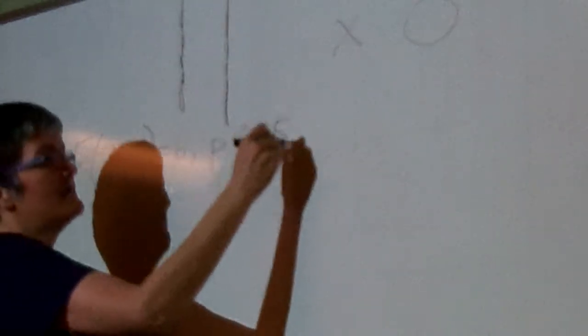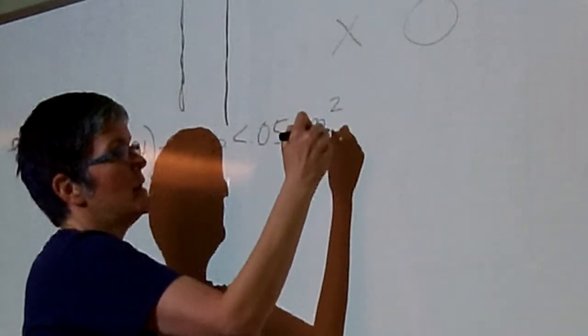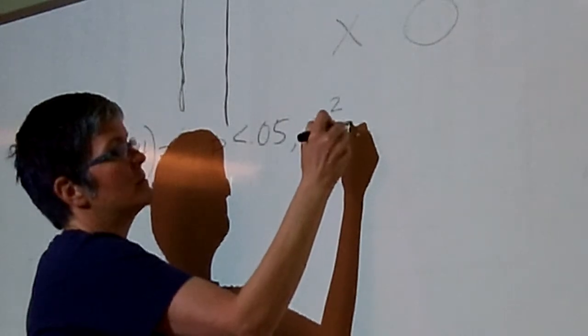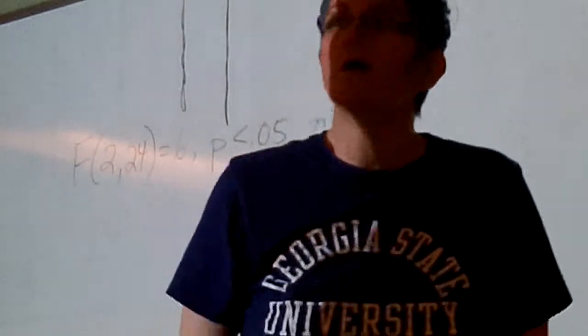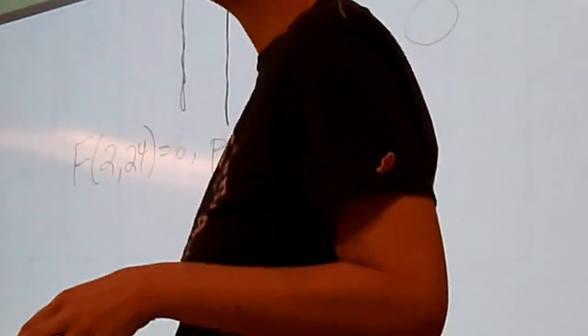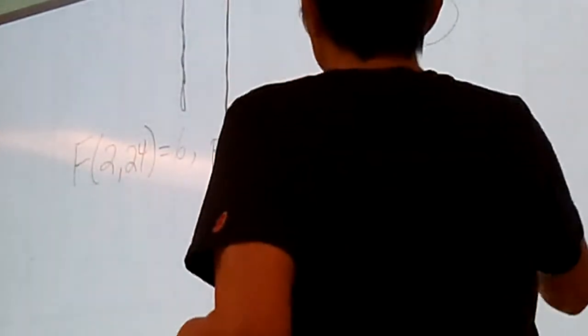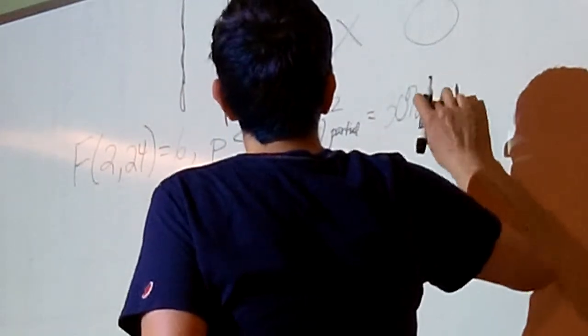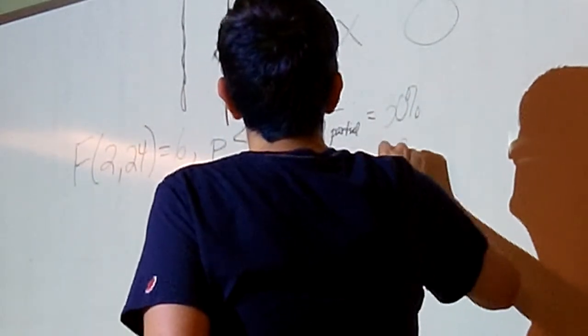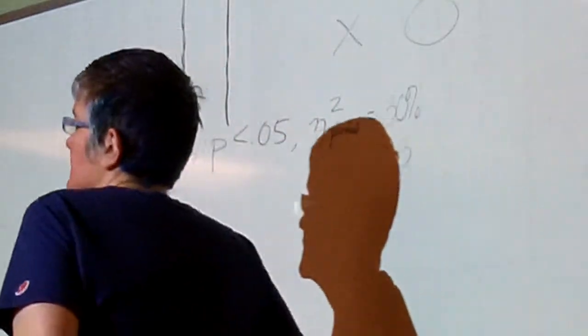And then the last thing we have is eta squared. If you want to be technical, it's eta squared partial, but you can just put eta squared, that's fine. And what was our eta squared for the interaction? 30%. You can put 30%, or if you like, you can put .3. Either one is fine.